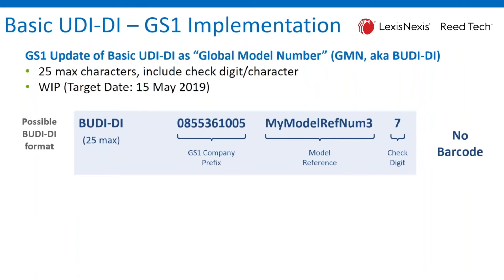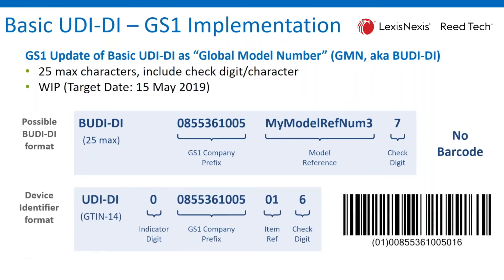Now, this is in comparison and contrasting to what is already in place that we see in the industry as a device identifier. A GTIN-14, for example, has 14 numeric values with an indicator digit on the leading front end and the company prefix, followed by an item reference number and a check digit. That particular identifier is commonly represented with either a one-dimensional or a two-dimensional barcode.